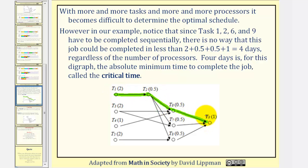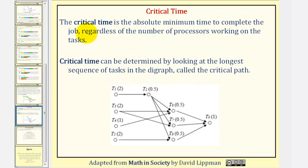Looking at the times of each task, notice there is no way to complete this job unless in two plus 0.5, plus 0.5, plus one, or four days, regardless of the number of processors. Four days is, for this diagram, the absolute minimum time to complete the job, which is called the critical time. The critical time is the absolute minimum time to complete the job, regardless of the number of processes working on the task.